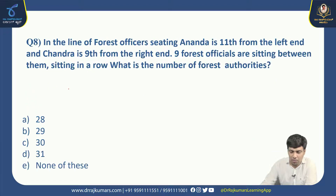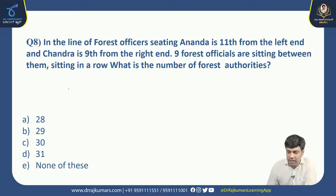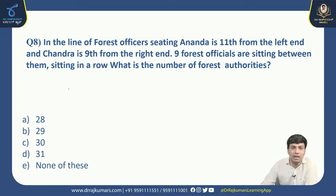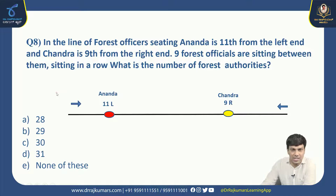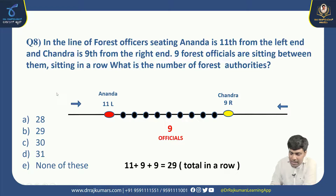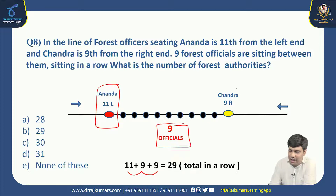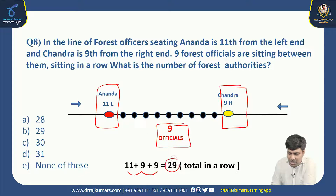Next: In a line of forest officers, Ananda is 11th from the left end and Chandra is 9th from the right end. In between, 9 forest officials are sitting. What is the total number of forest authorities in the row? The calculation is 11 plus 9 plus 9, where 11 is Ananda's position, 9 is the officials in between, and 9 is Chandra's position. So there are 29 persons in the row. Right option is B.